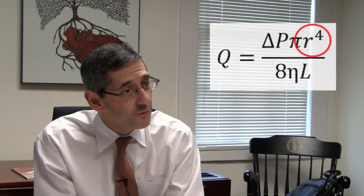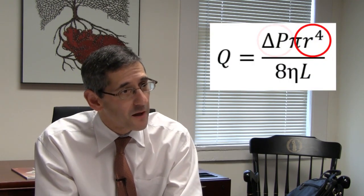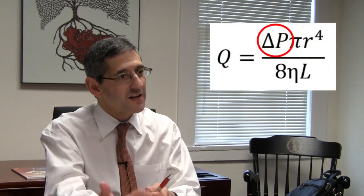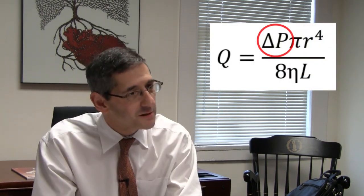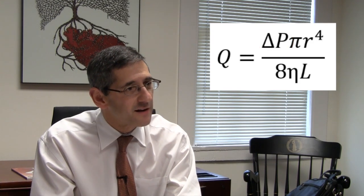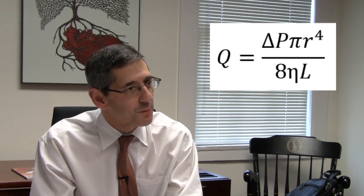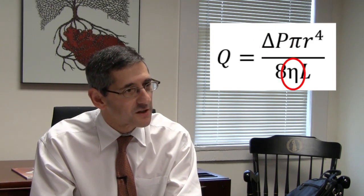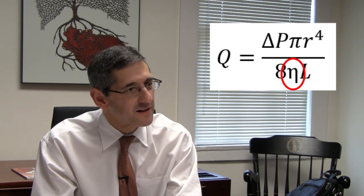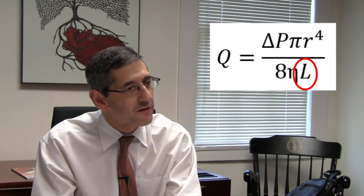The Poiseuille principle states that any flow in the body is proportional to the radius to the fourth power and the pressure gradient across whatever that tube is, and it's inversely proportional to the viscosity and, if it's a tube, the length of the tube.